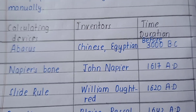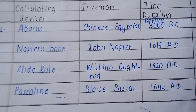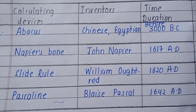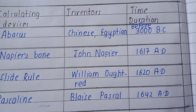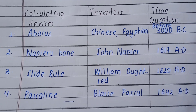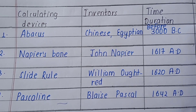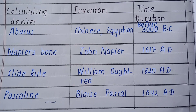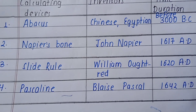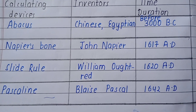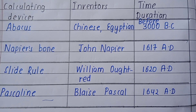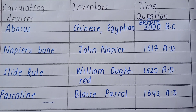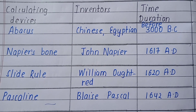The second device is Napier's Bones, which was developed by John Napier in 1617 AD. The third device is the Slide Rule, and William Oughtred was the inventor of this device in 1620 AD.